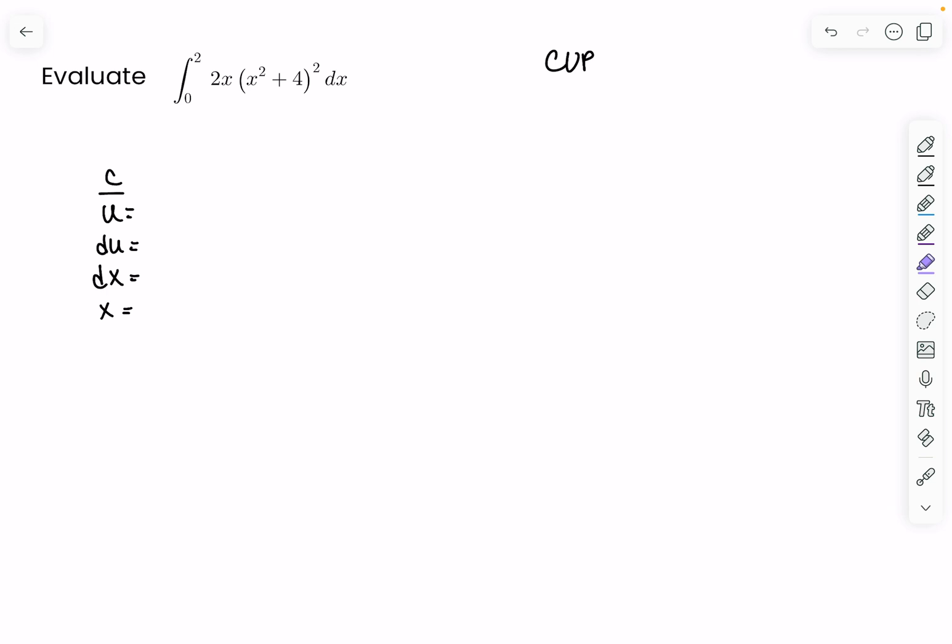I look at this problem and I'm like, what's the turkiest part about it? Probably this. And so what I do is I make my u whatever's on the inside, so I'm going to make my u x squared plus 4.